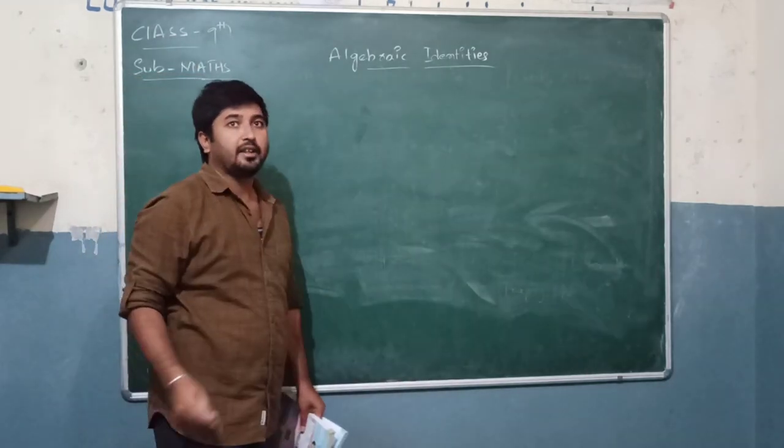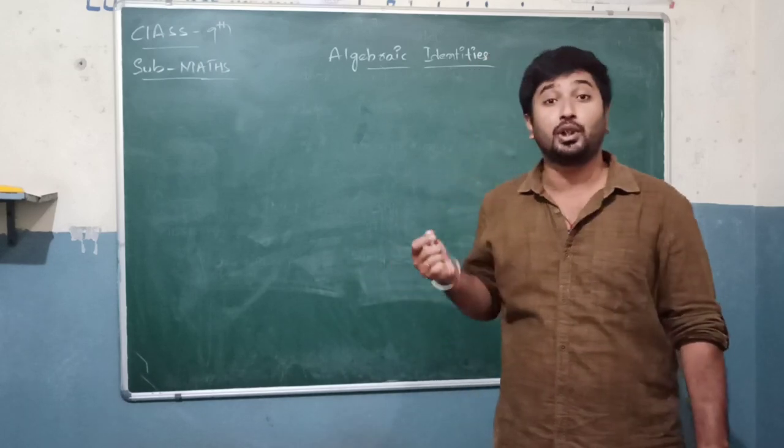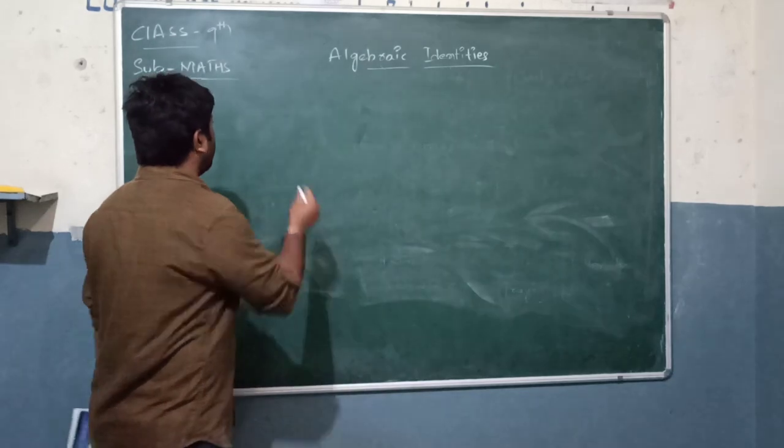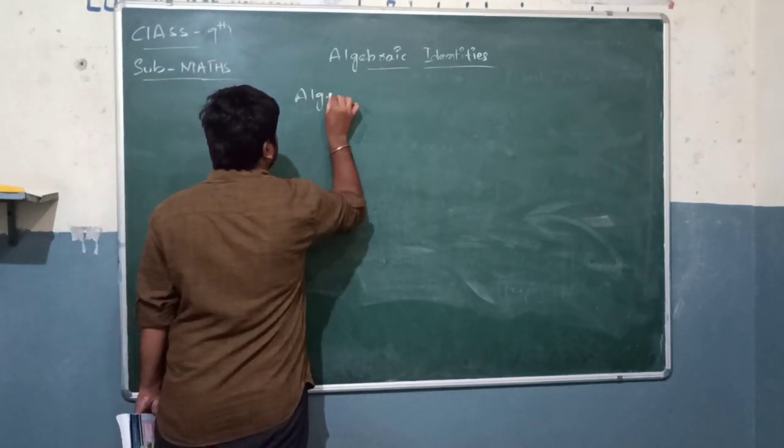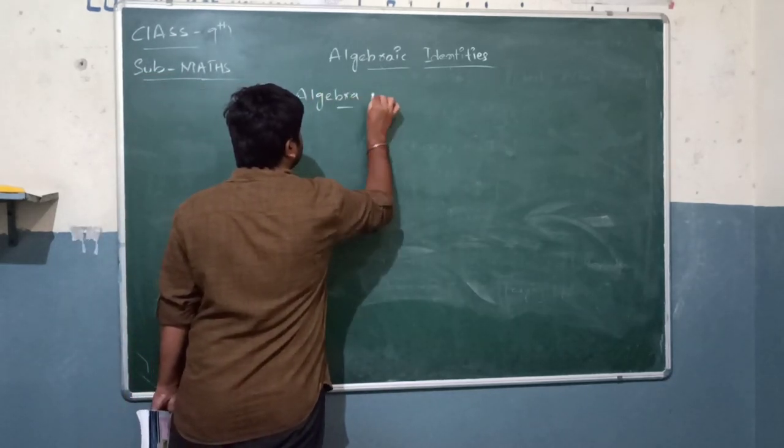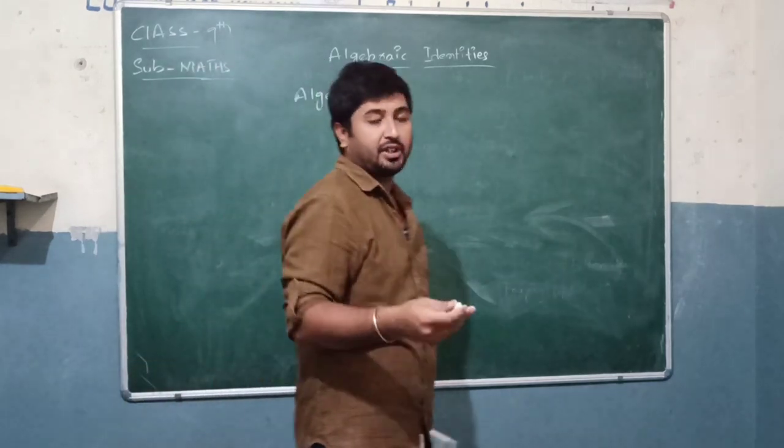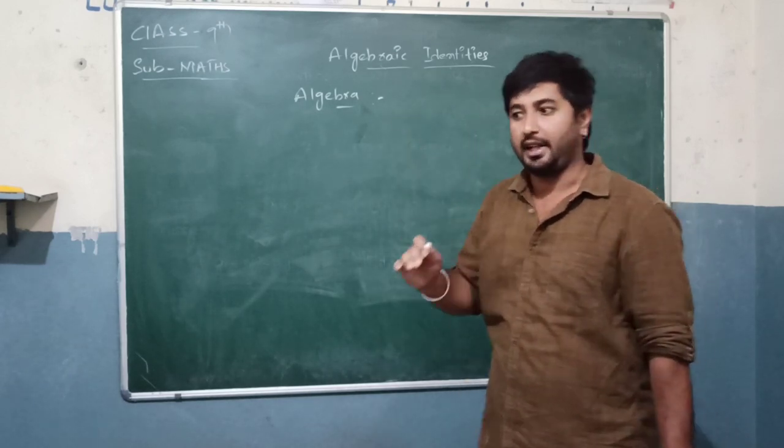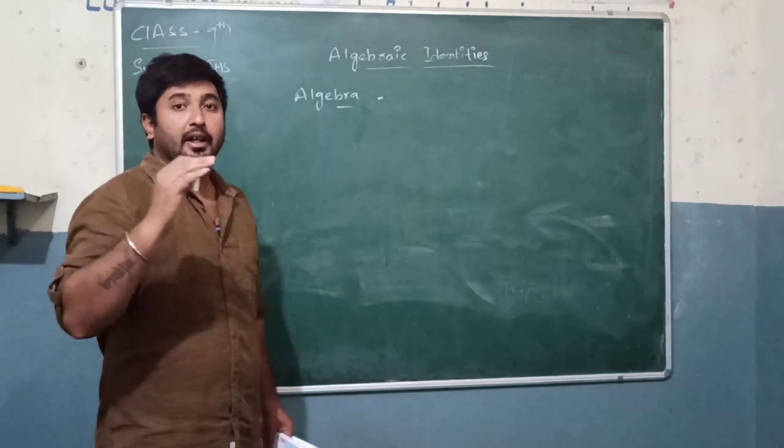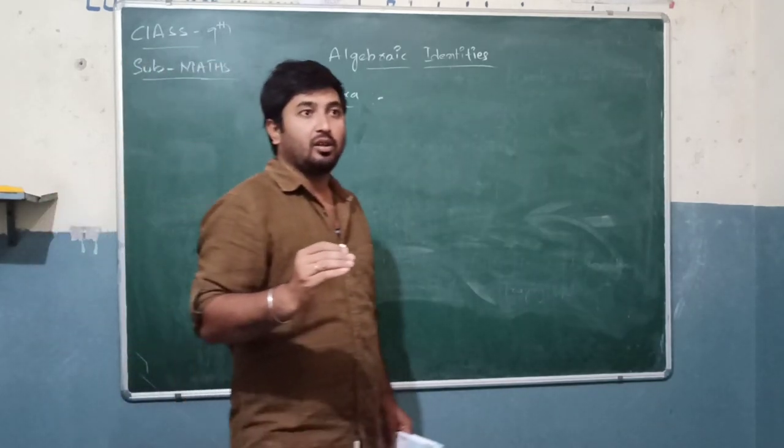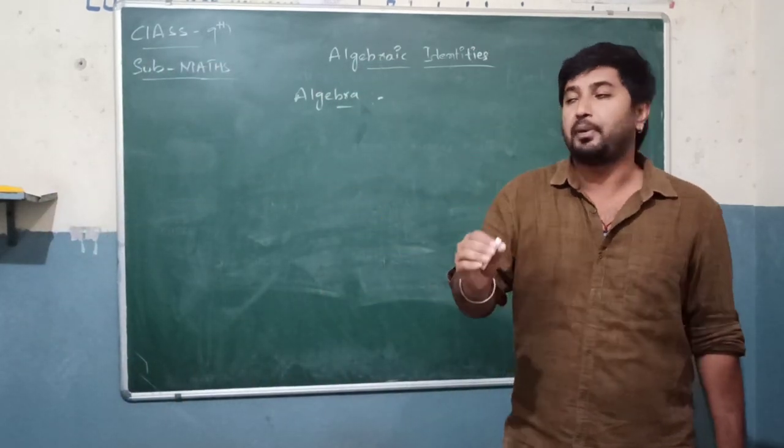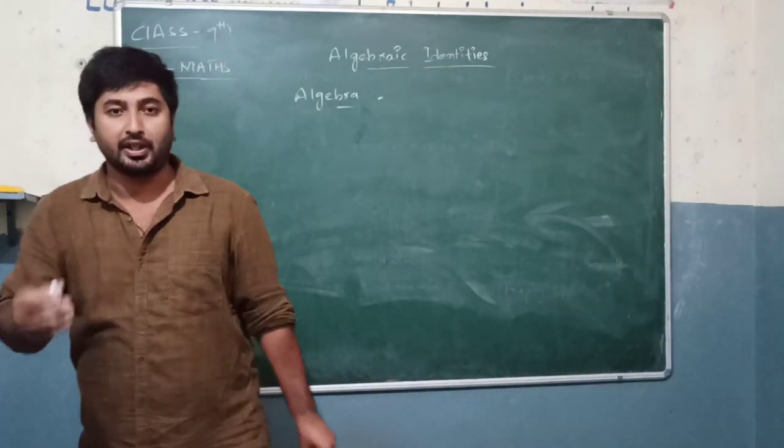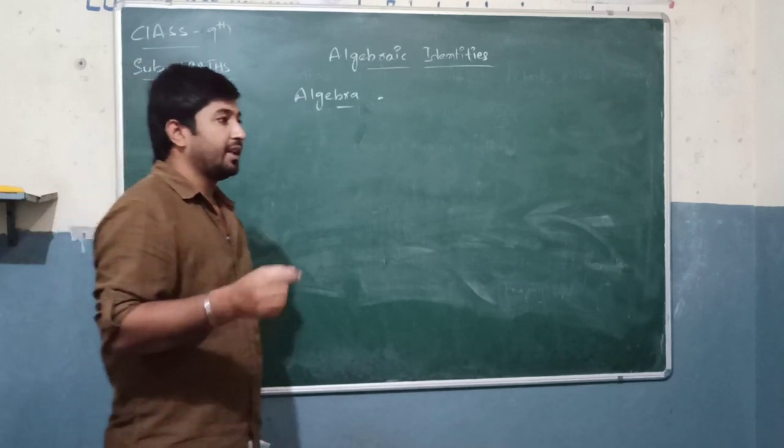For class 9, I think you already know the definition of algebra. Algebraic identities are expressions, because algebra is a common form of mathematics. What is algebra? You can easily say that algebra is one of the mathematical studies where a variable, a letter, and a symbol represents the value.